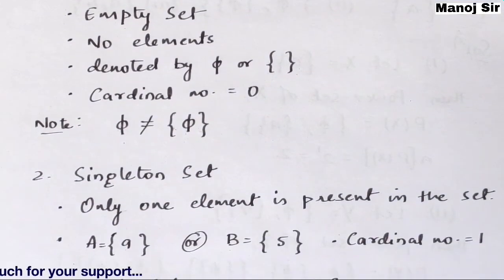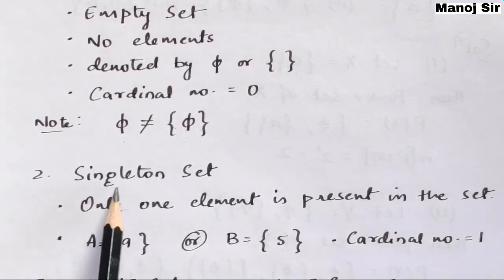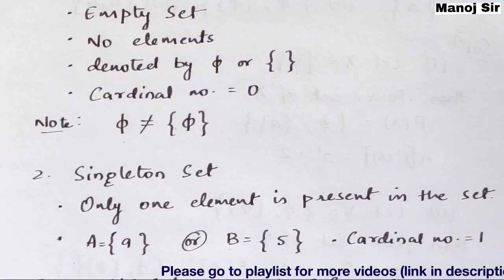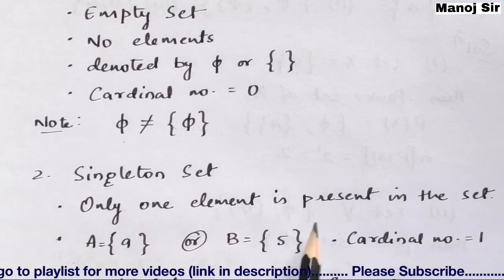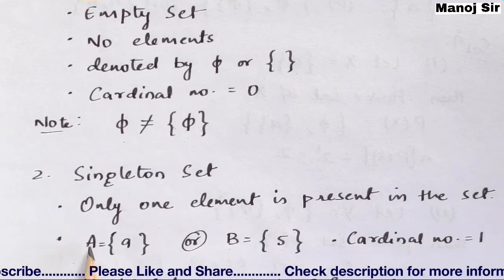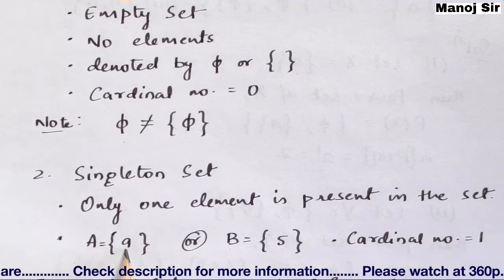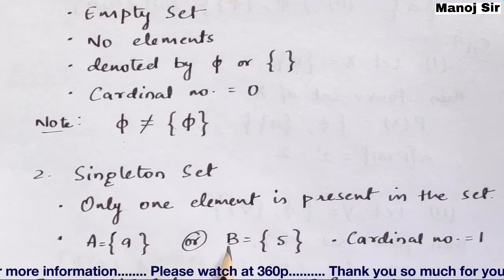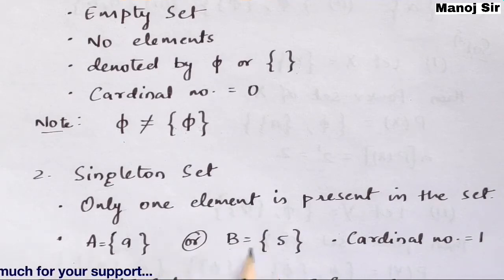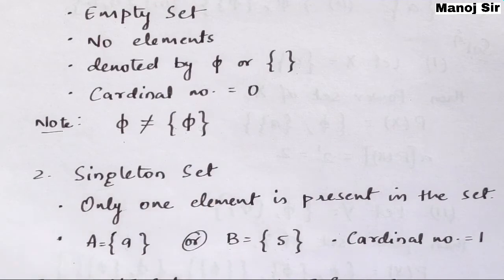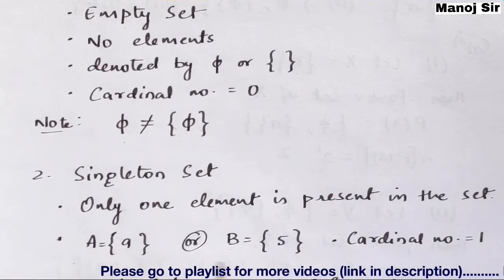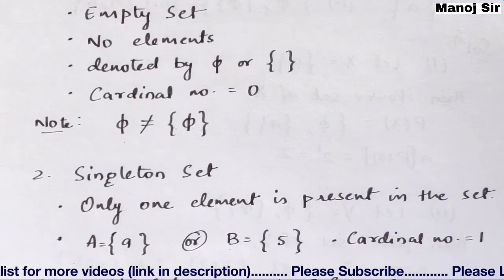The second type is the singleton set. You can see the word 'single' in it — it means only one element is present in that set. For example, set A with only one element 'a', or set B with only one element '5', are both examples of singleton sets. The key point is that the cardinal number for a singleton set is always one.